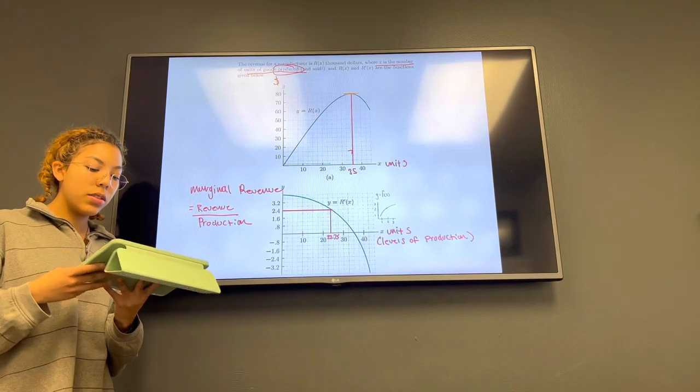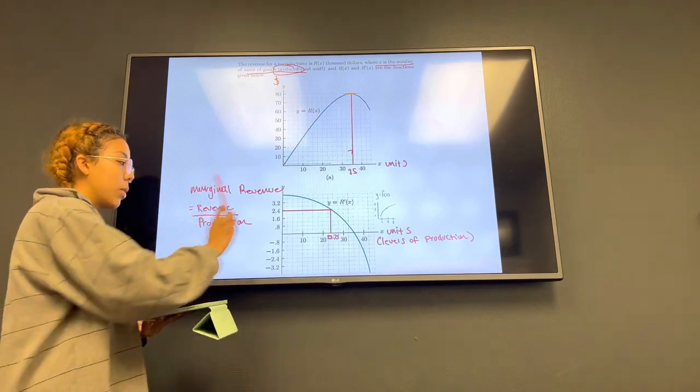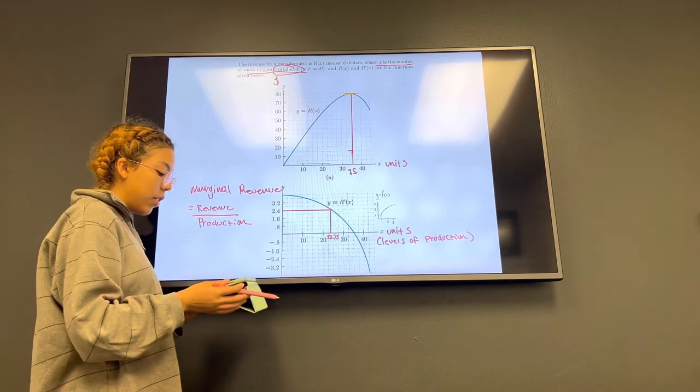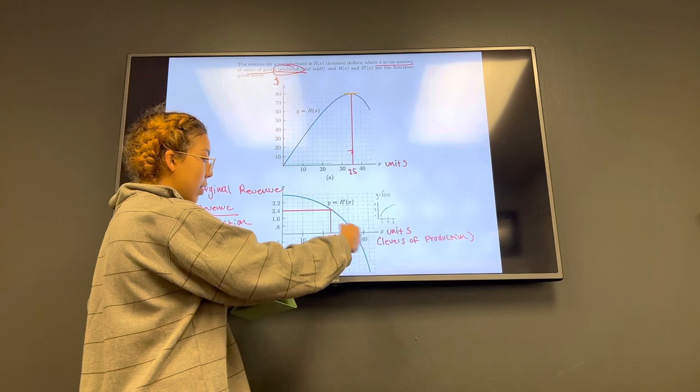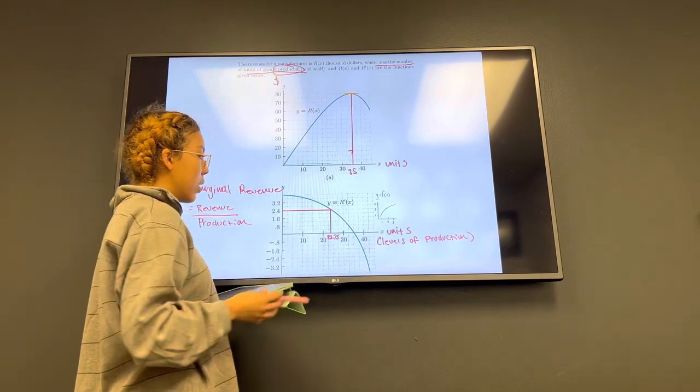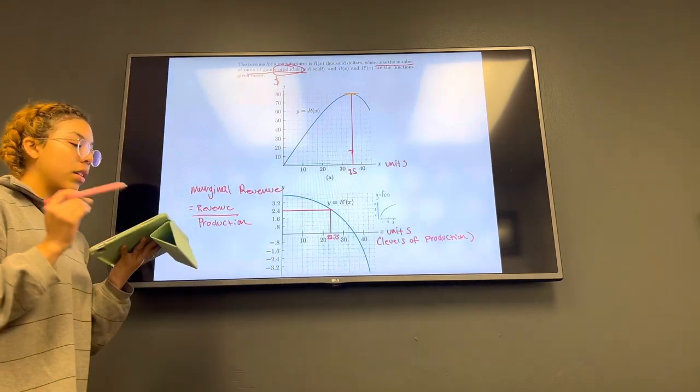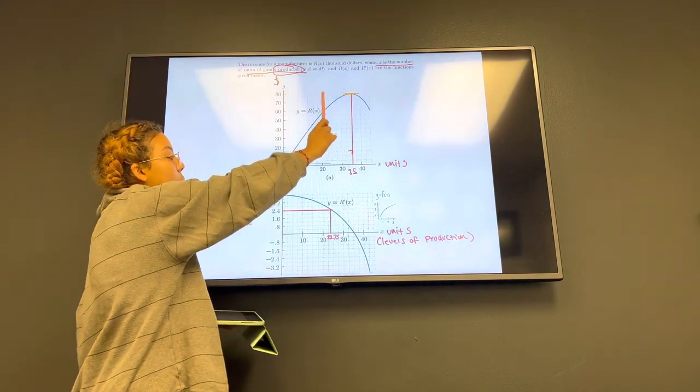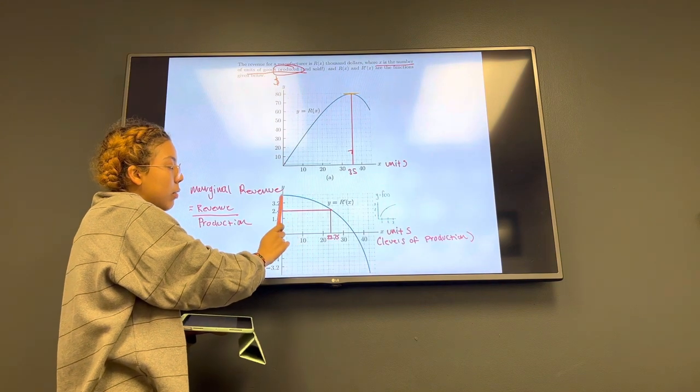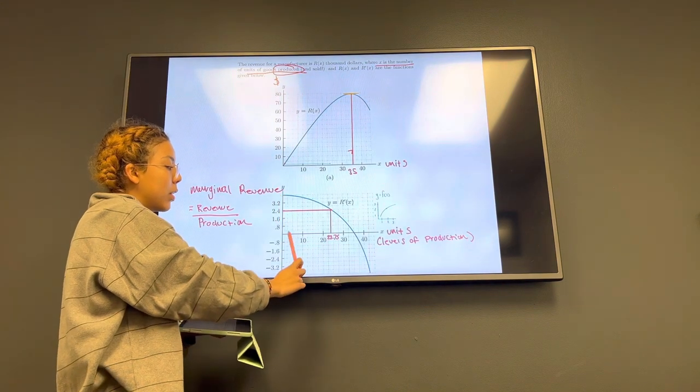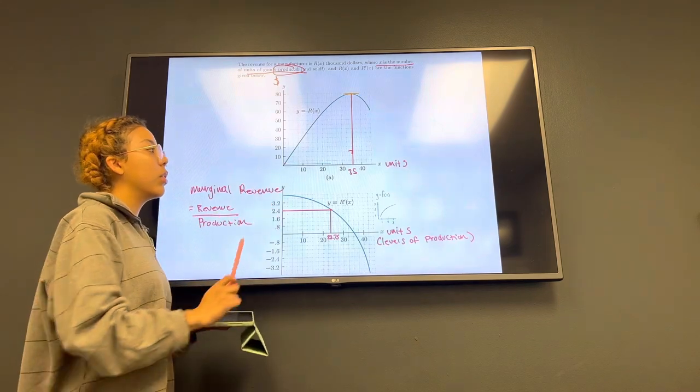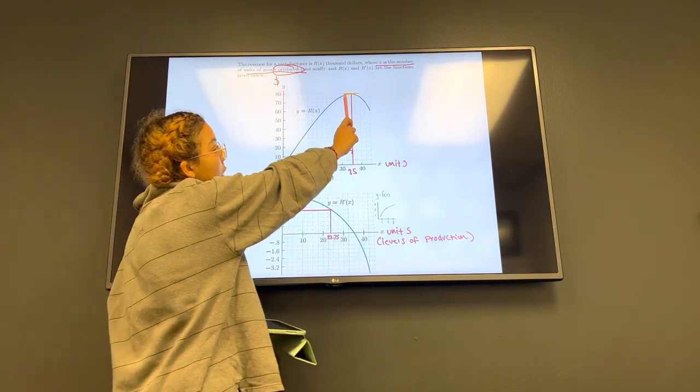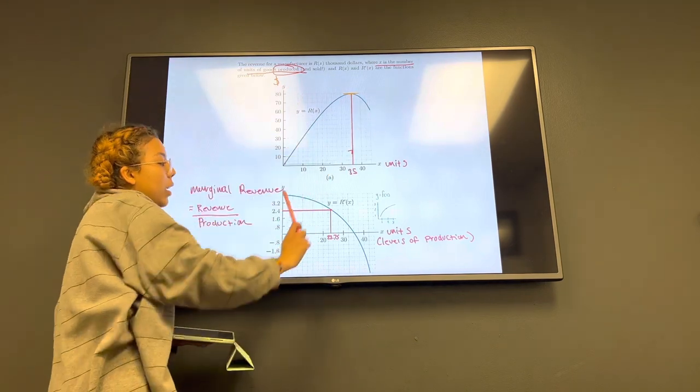The last question also asks how we can use the marginal revenue graph to determine the level of production where the revenue is the greatest. Here on our x-axis with the levels of production, if we want to see where our revenue is the greatest, we have to use the slope of zero. On our derivative graph, when the level of production is zero, that is when we have our highest revenue. And it shows here on the regular graph that when our slope is zero, our highest revenue would be $80,000.